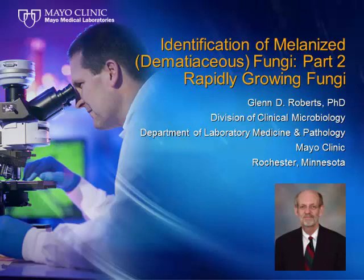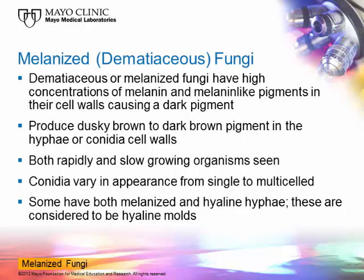This is part two of a three-part series focusing on melanized fungi, in which Dr. Roberts describes the characteristics of melanized fungi and the steps necessary to identify the specific fungi present. Part two focuses on the rapidly growing fungi. Melanized or dematiaceous fungi are organisms that have high concentrations of melanin or melanin-like compounds in their cell wall, causing them to be pigmented.